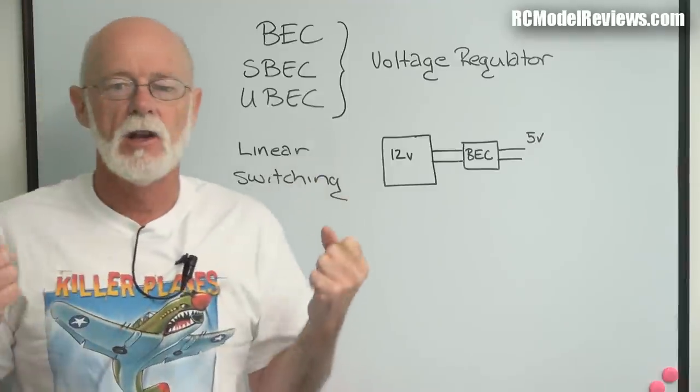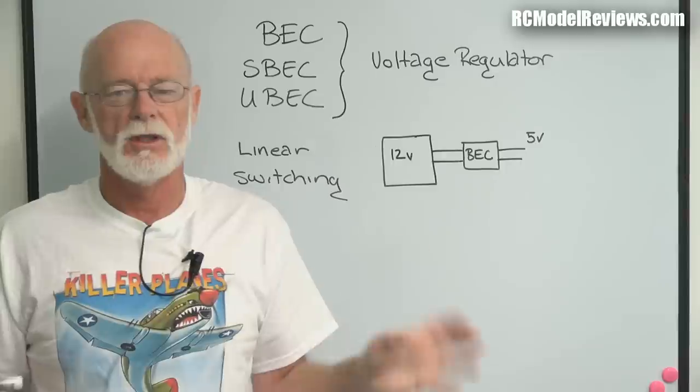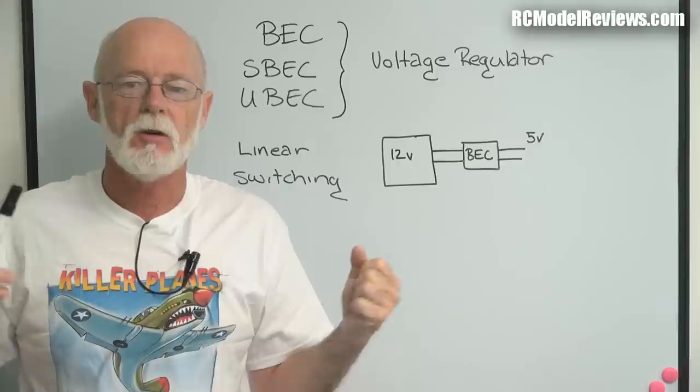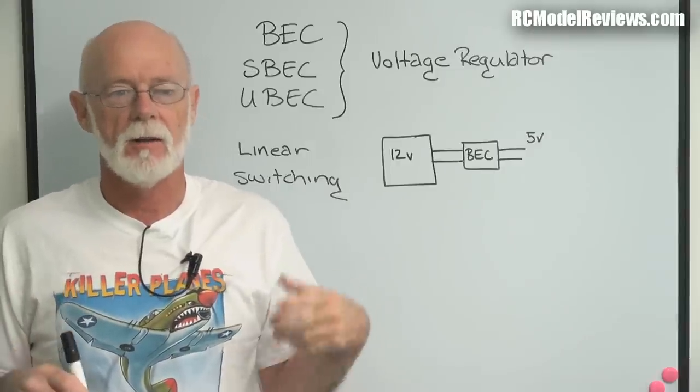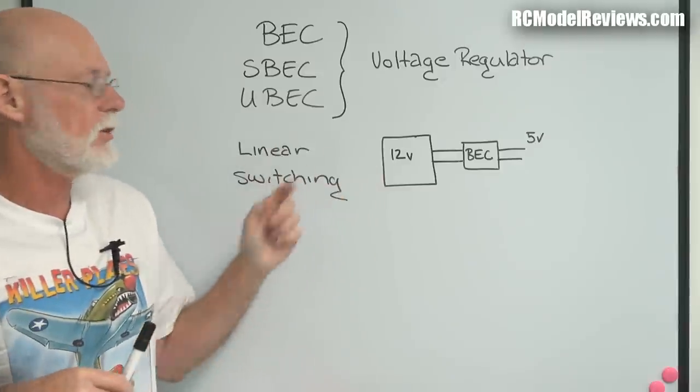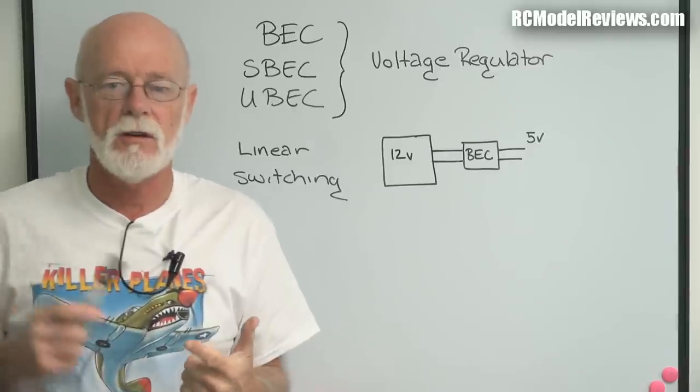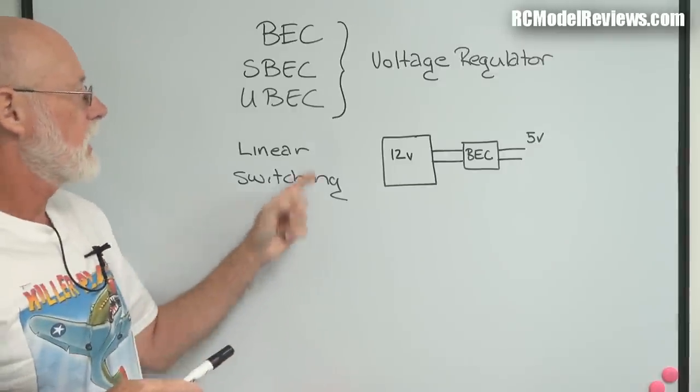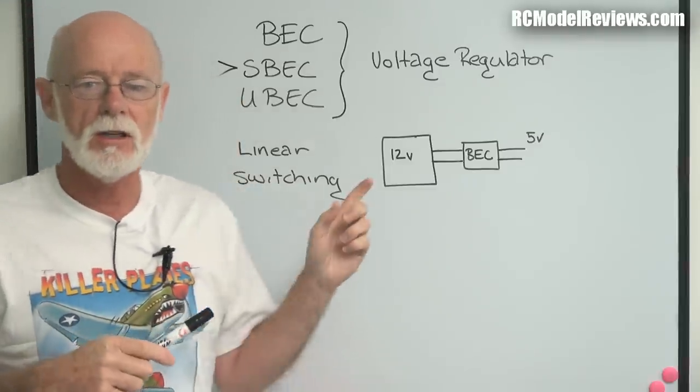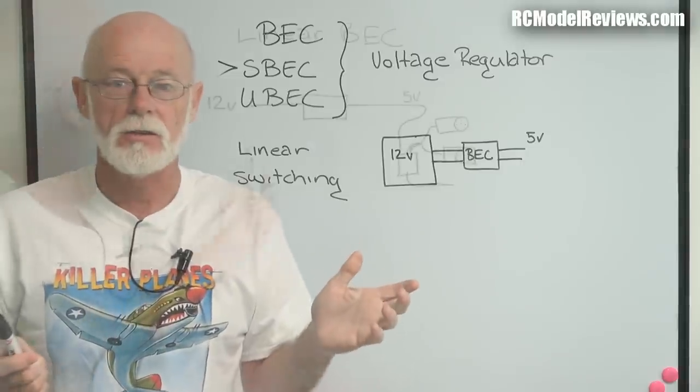Linear BECs are great for low power models when you've only got a small model, small foamy, 3 or 4 servos, little 9g servos. These linear BECs, they're going to do the job okay. Also, if you're running from a relatively small battery pack, like a 2-cell or a 3-cell, maybe even a 4-cell, then a linear BEC is going to do the job okay. But when you get into something bigger, something with more voltage, something with more servos, you need a switching BEC, which is normally called an SBEC. An SBEC works in a totally different way to a linear BEC. So I think I'll show you the difference.